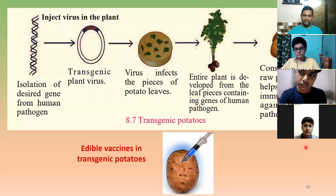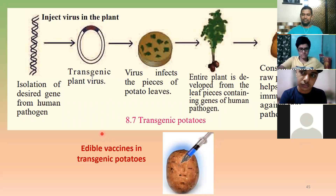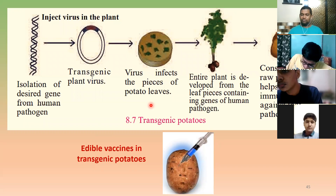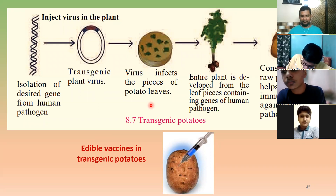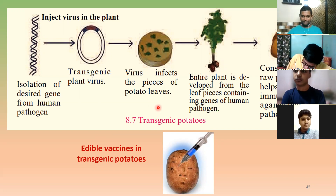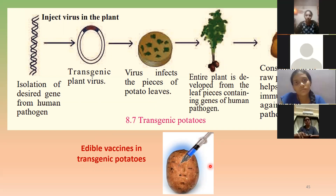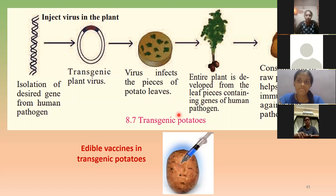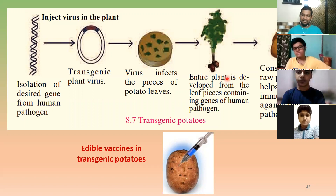However, the edible vaccine concept has not been very successful. The reason is that nobody eats potato raw — it has to be boiled or cooked. When tested, it was found that when the vaccines are heated or boiled, they lose their efficacy. Research is ongoing to find a crop that is consumed raw, so the vaccine remains effective. The edible vaccine concept is still being researched.